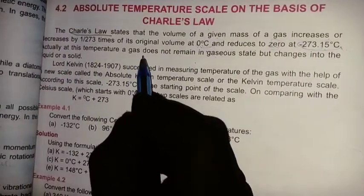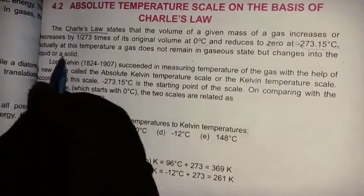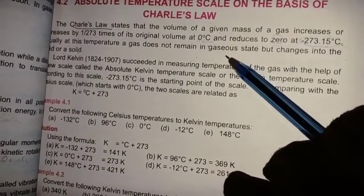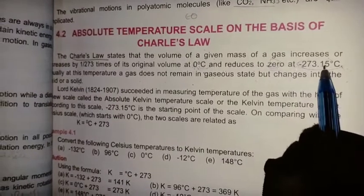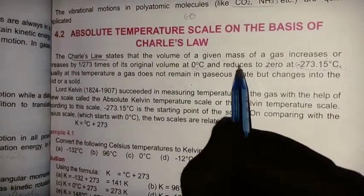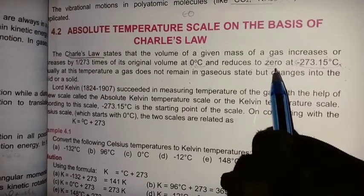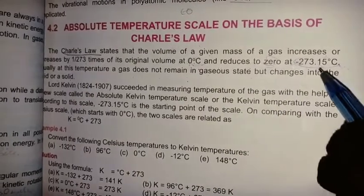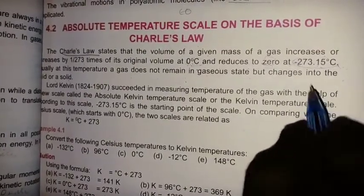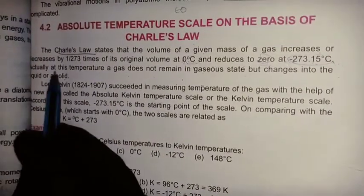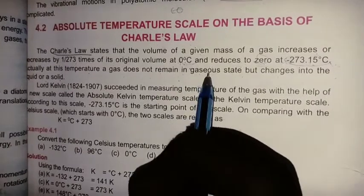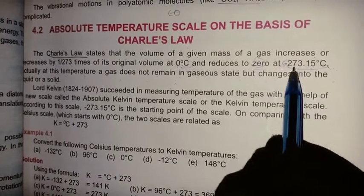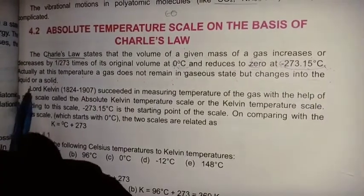Actually, at this temperature a gas does not remain in gaseous state but changes into liquid or solid. When temperature reaches minus 273.15°C, the volume becomes 0 because the gas converts into liquid and solid. So the volume will be 0 — the gas does not remain in gaseous state at minus 273.15°C.